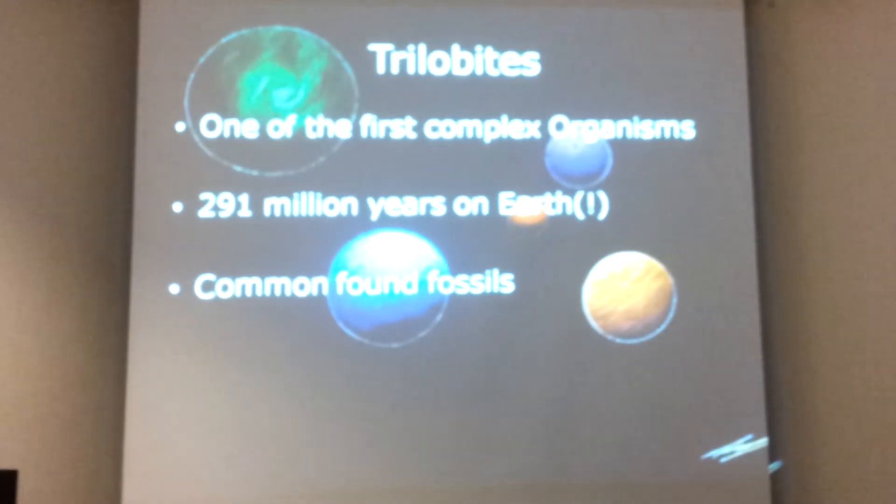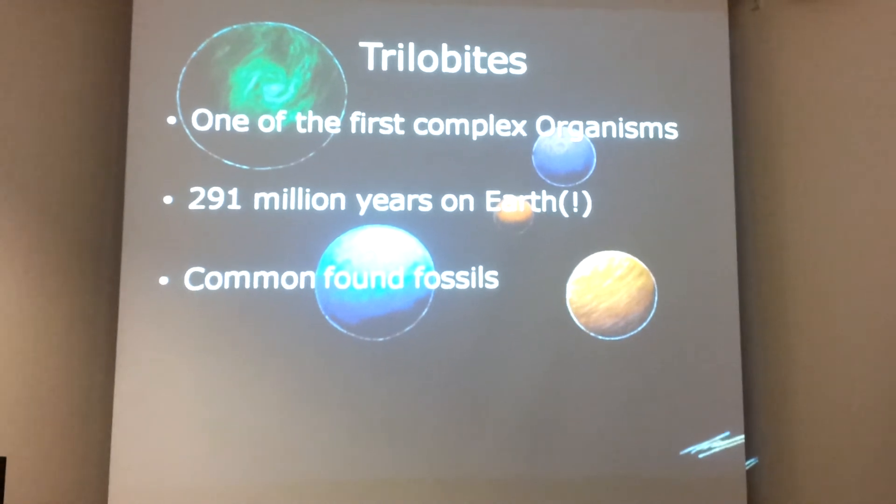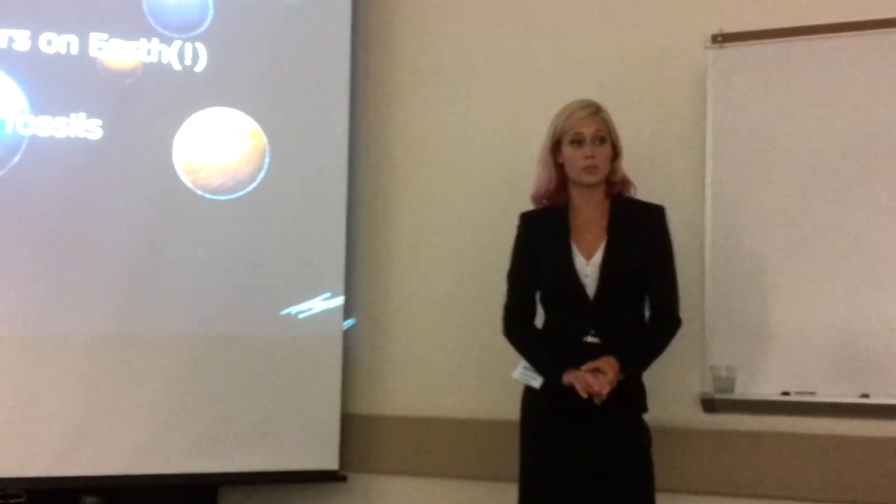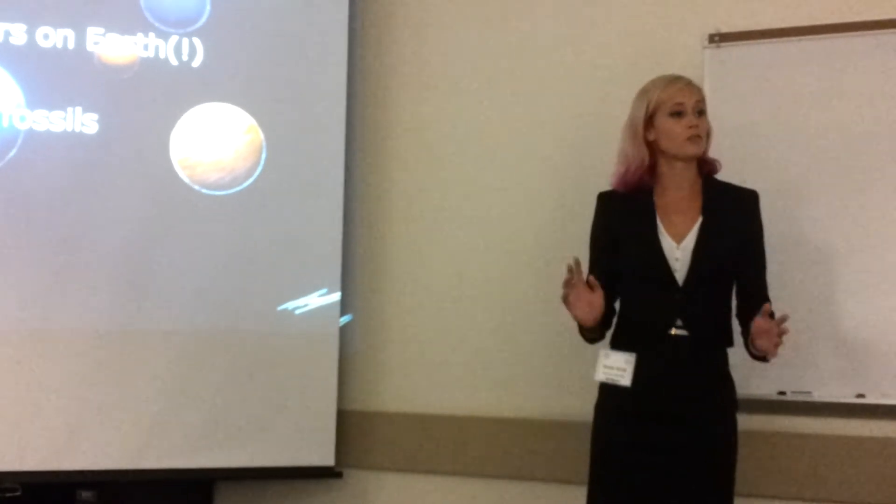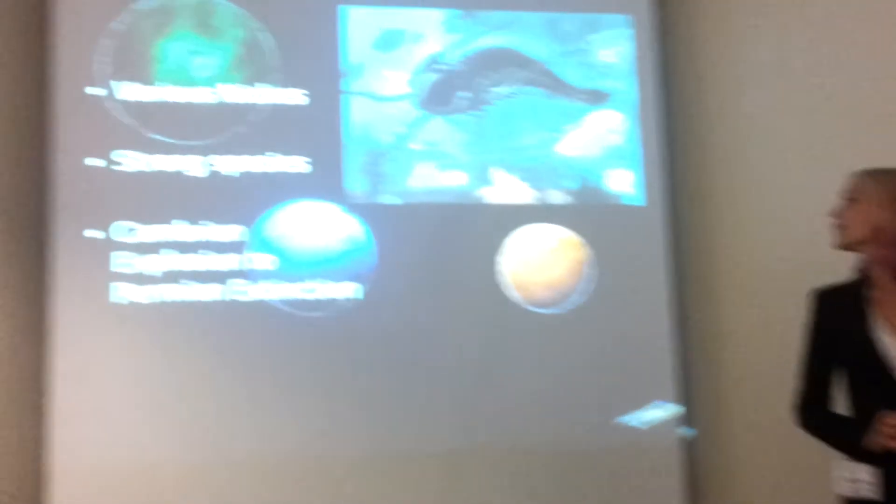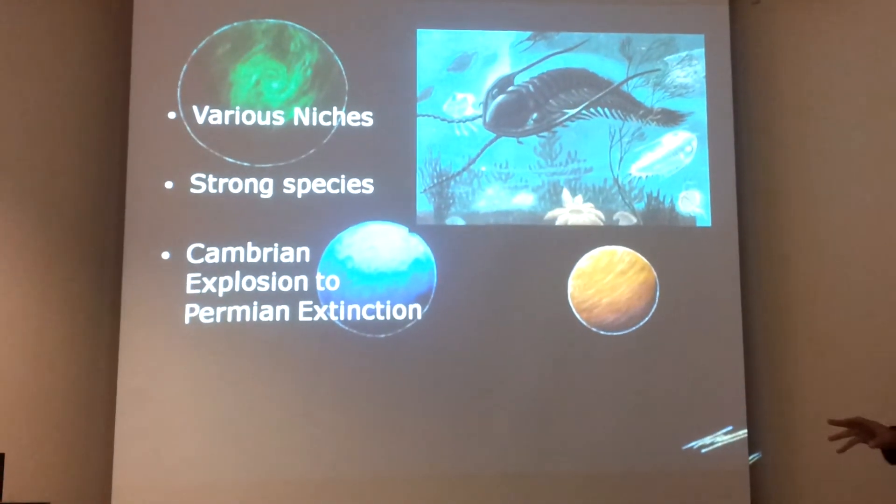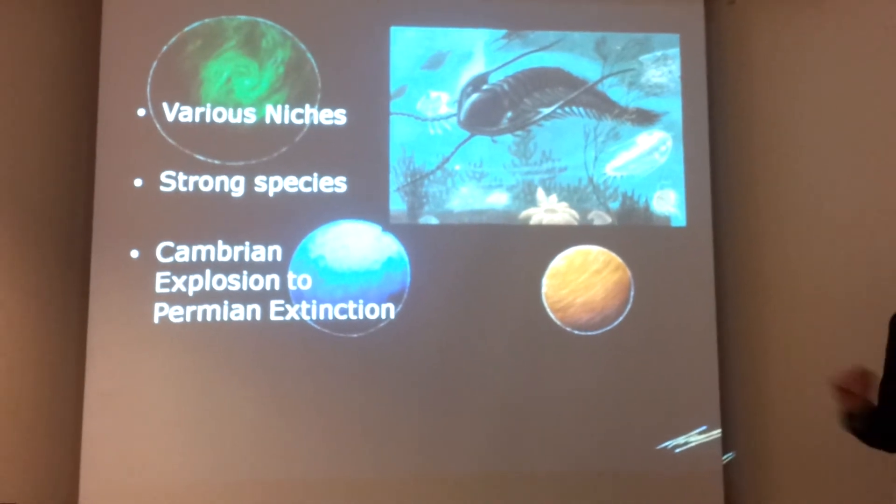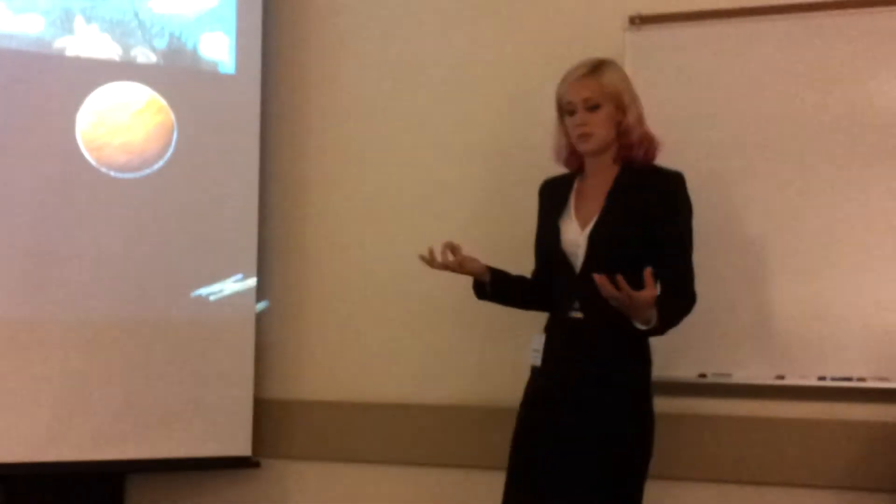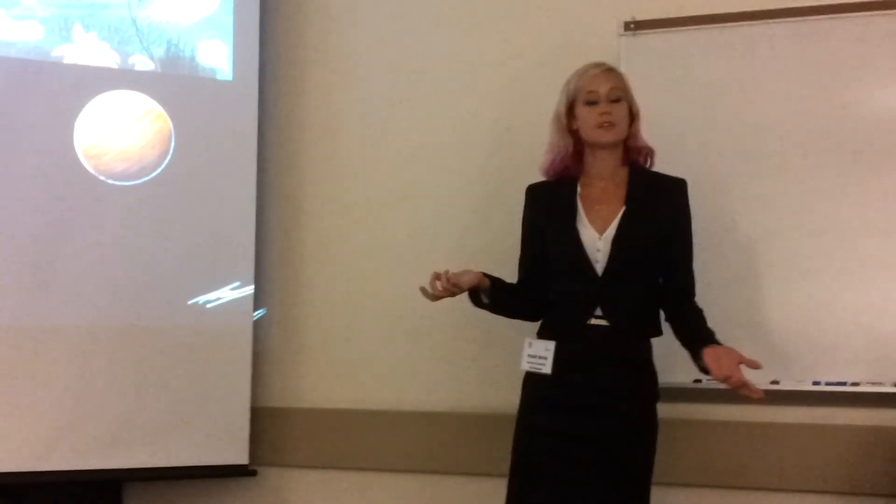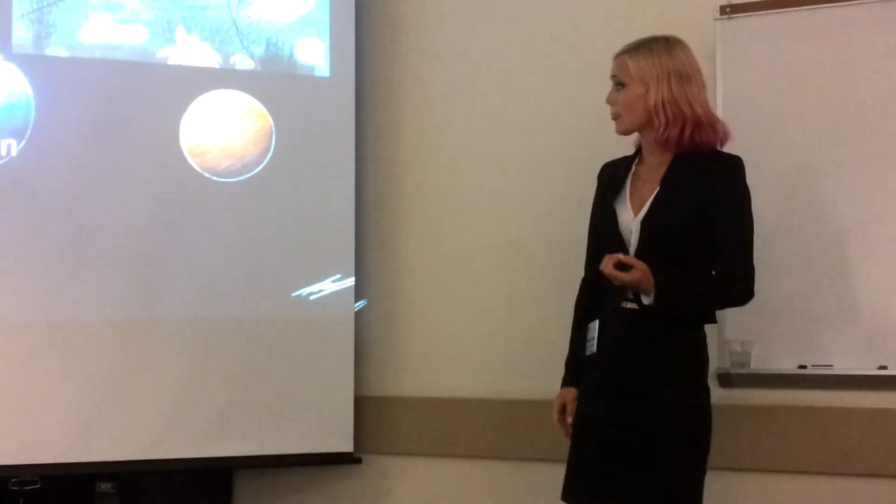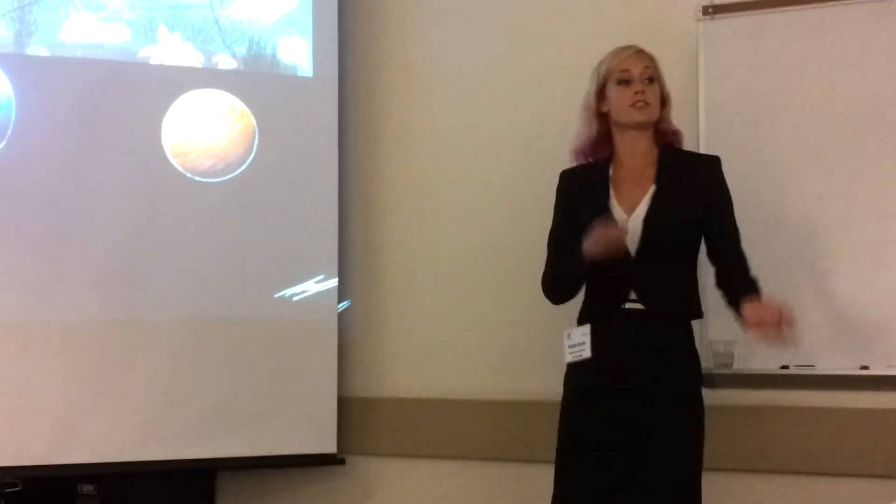Trilobites were, as you may know, one of the first complex organisms that roamed this earth. They've been on this earth for a stunning 291 million years. Almost no species have done that long. It's truly remarkable. And they're, I think, the most common found fossils on this earth. Some may be proud of my little trilobite, but it's not much actually. Can you know the next? Yeah. They've filled various niches. They were scavengers. They hunt prey. They were hunted. They swam. They crawled the sea floor. They were in the shallow oceans, but they're in the deeper oceans. So actually, they were quite stable, actually, as a global species. You don't expect anything to just wipe them out because they were very strong and they were very present.